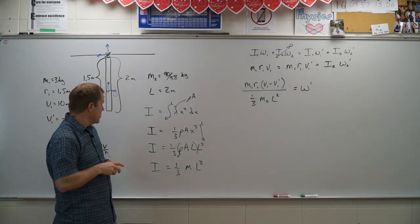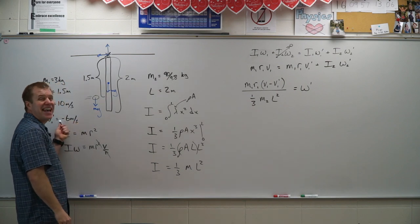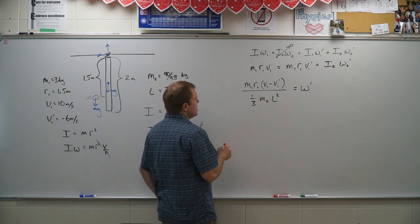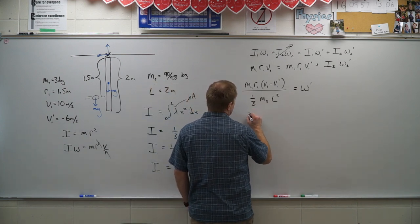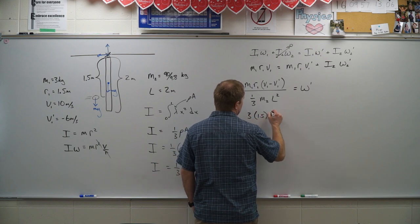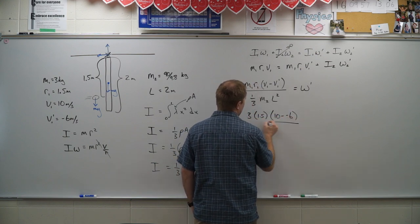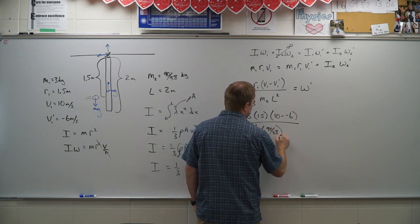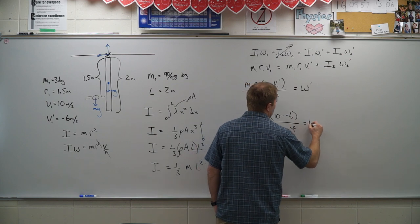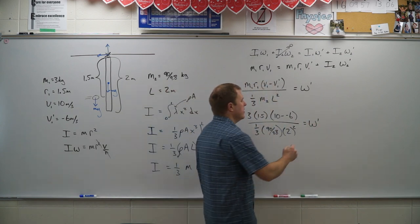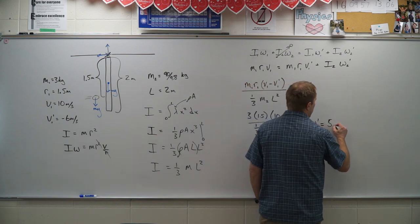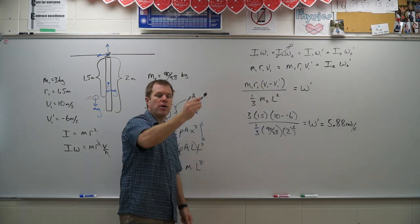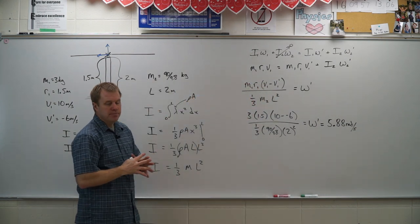A good point here to note is we do need to make sure we have that negative sign on that six. Otherwise this is not going to work out for us. So plugging in those numbers. So I have three times 1.5 times 10 minus a negative six, all divided by one third times that 90 divided by 9.8 times L, which was two squared will give me the omega prime here. Putting that into my calculator, I ended up with 5.88 radians per second is how fast that bar rotates off initially. There you go.